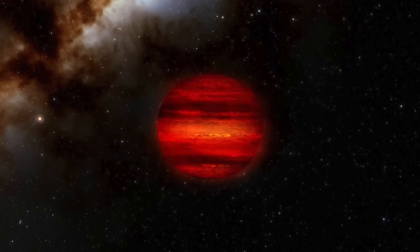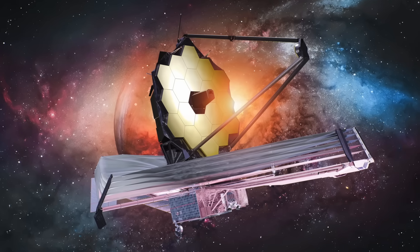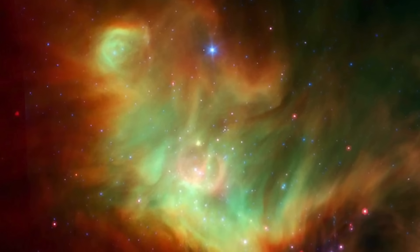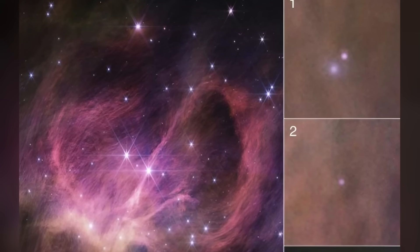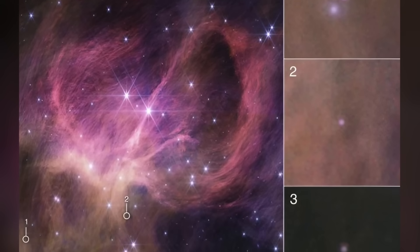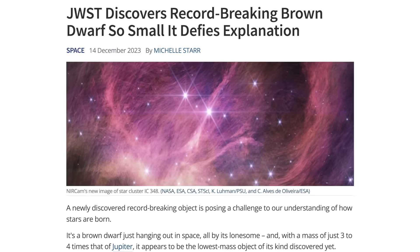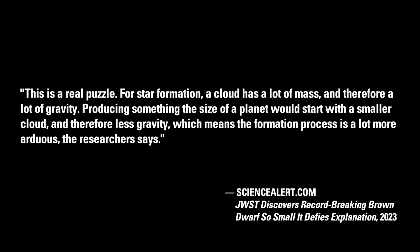Consider the extraordinary revelation into the formation of so-called brown dwarf stars. A team of astronomers using the James Webb Space Telescope has undertaken the task of identifying the smallest of all observable stars. They focused their attention on the Perseus star-forming region about 1,000 light-years away, at the center of star cluster IC 348. The team identified three so-called sub-brown dwarfs, the smallest of which has an estimated mass equivalent to three or four Jupiters. According to a Science Alert report, this is a real puzzle: for star formation, a cloud has a lot of mass and therefore a lot of gravity, but producing something the size of a planet would start with a smaller cloud and therefore less gravity, making the formation process far more arduous.